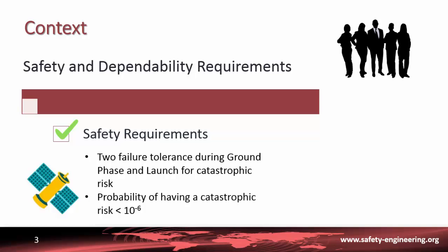Second, the probability of having a catastrophic risk shall be less than 10 power minus 6. To demonstrate compliance with these requirements, we will develop a fault tree analysis.